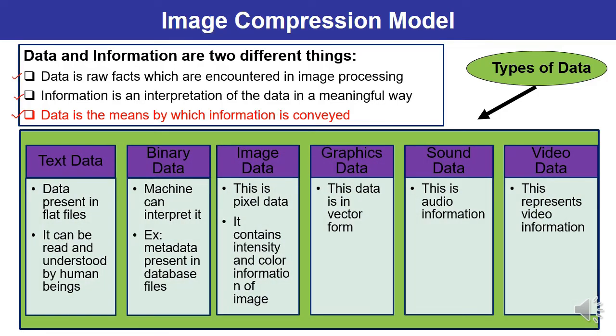The first type is text data. Text data is present in flat files and it can be read and understood by human beings — we can easily read and understand it. The second is binary data, which is interpreted by machines only, like metadata present in database files. The third is image data. An image can be represented in the form of a matrix and consists of pixels, so image data is pixel data containing intensity and color information of the image.